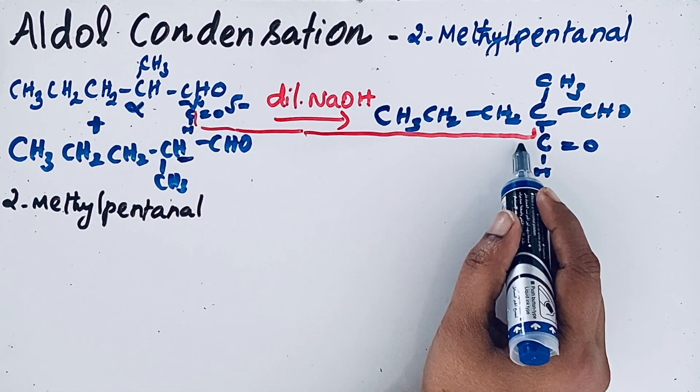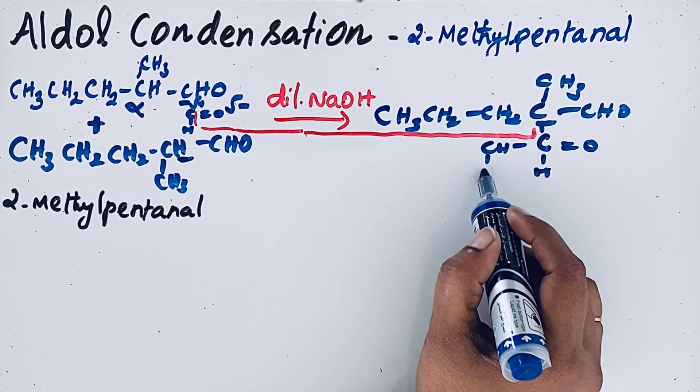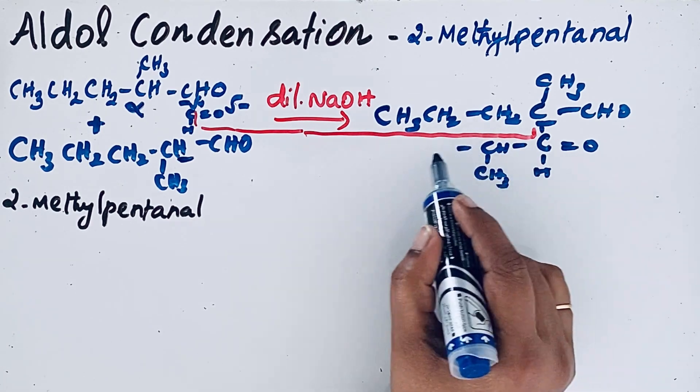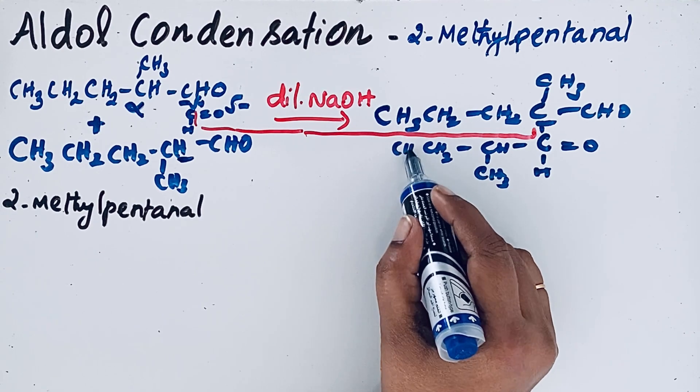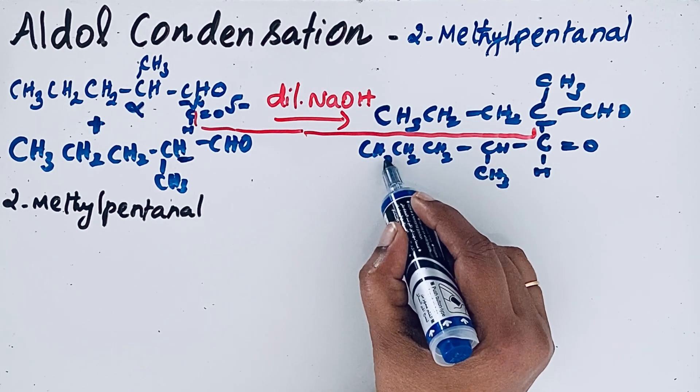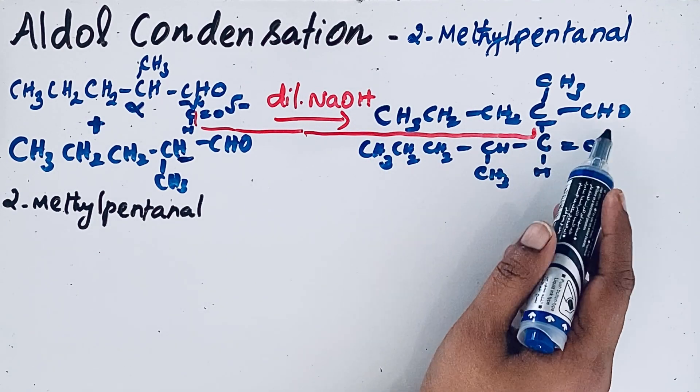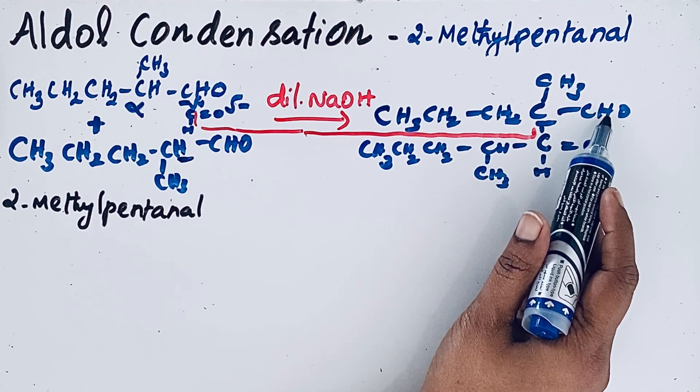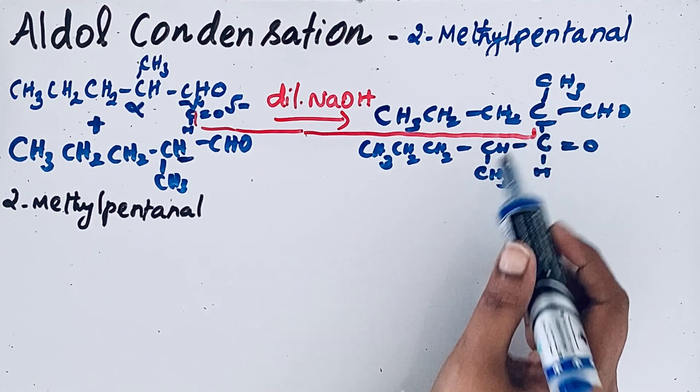Then after that, CH, then one methyl group is attached here. Then CH2, CH2, CH3. For better understanding, keeping that CHO group as your first position, we will rewrite again.